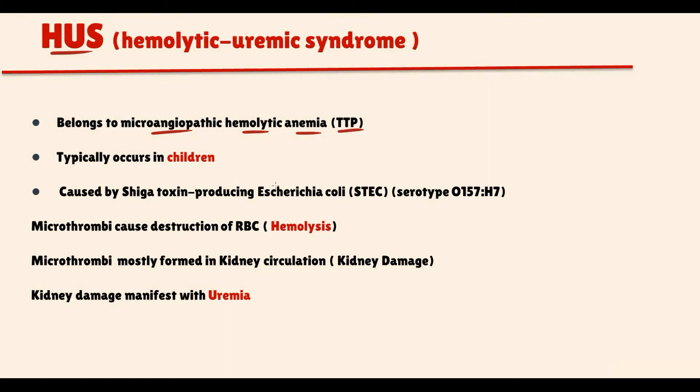Hemolytic uremic syndrome typically occurs in children and is caused by Shiga toxin-producing Escherichia coli with specific serotype O157:H7.